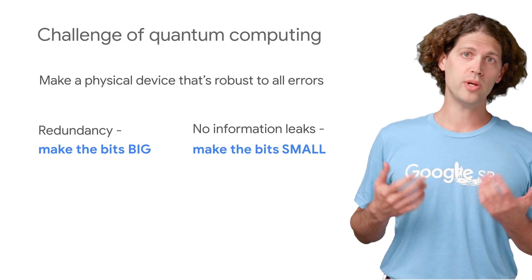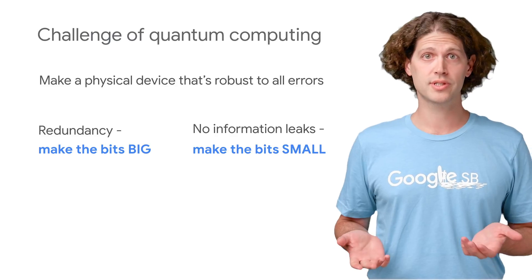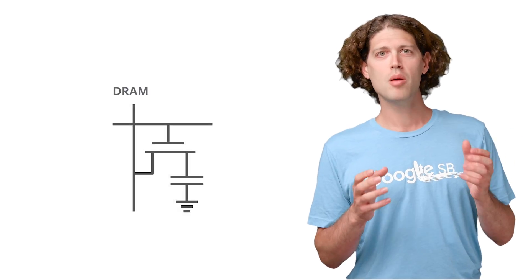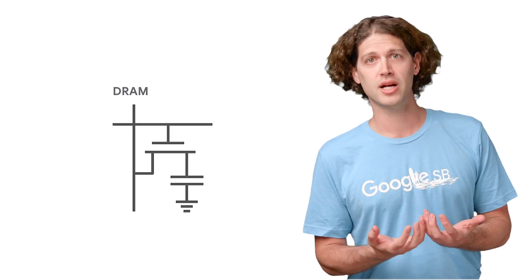At Google, we use a technique that gets the best of both worlds. We use circuits with a huge number of electrons, but we prevent quantum errors with superconductivity.